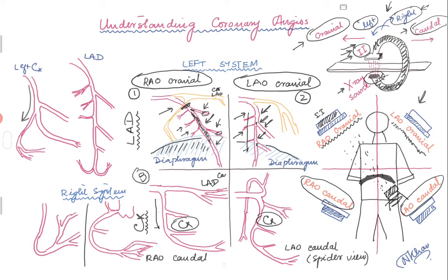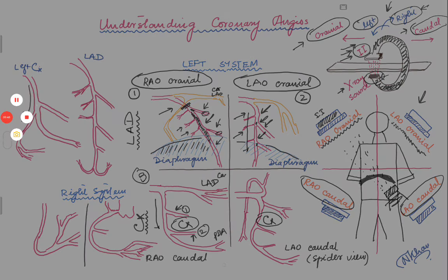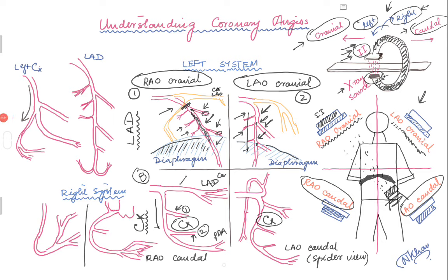Now the caudal views — image 3, the RAO caudal view. The left circumflex comes down with OM1 and OM2 branches visible. In a dominant system, the PDA and PLV may also be seen. The RAO caudal view is good for looking at the body of the left circumflex, the proximal LAD, and the OM branches. It is the view of choice for ostial disease or disease in the body of the left circumflex.